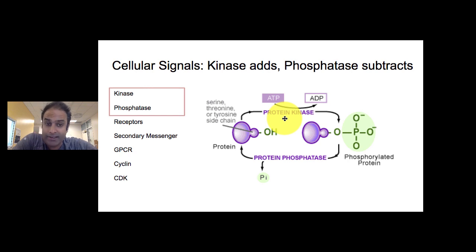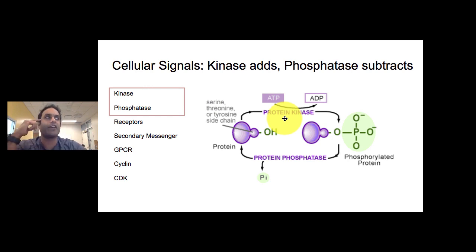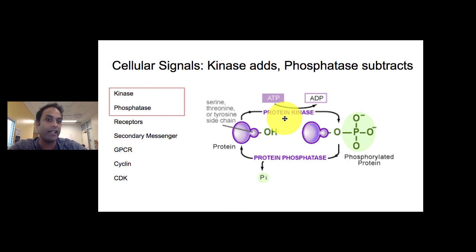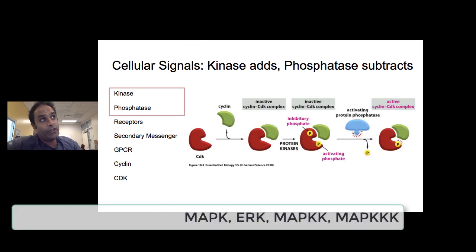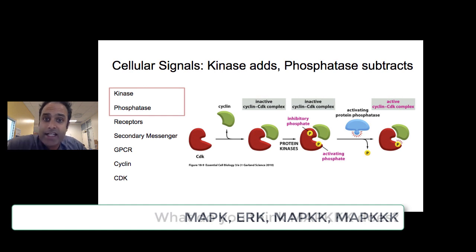Kinases are often abbreviated — anytime you see a biological enzyme or protein that ends in the letter K, like MAPK, you're generally going to be talking about a kinase. Phosphatases are different; they're called all kinds of different things and don't often end with the letter P, so they're sneaky.